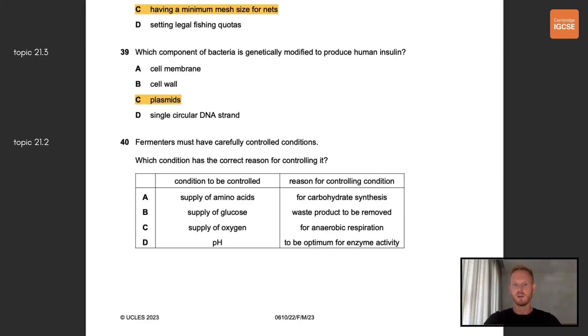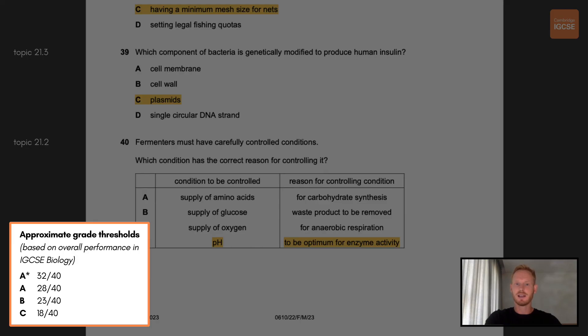Last question, question number 40, fermenters must have carefully controlled conditions. Which condition has the correct reason for controlling it? The only one here that makes any sense is D. pH is controlled in a fermenter to ensure optimum conditions for enzyme activity. Okay so that's it for another extended multiple choice paper. Well done if you've followed me all the way to the end. Leave a thumbs up if you benefited from this video and subscribe to the channel if you'd like to be notified when I upload the next one.